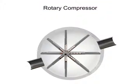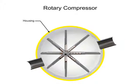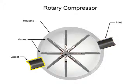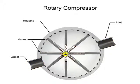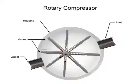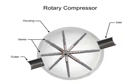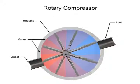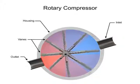Rotary compressors typically consist of a cylindrical housing with adjustable rotary vanes, an inlet, and an outlet. The vanes are on an off-center drive shaft. As the shaft rotates, the vanes slide in and out to maintain contact with the cylindrical compressor wall, creating chambers within the cylinder of varying sizes.